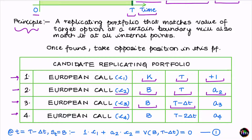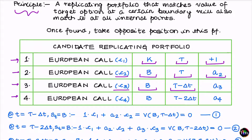All three options corresponding to the red boundary have strike equal to B, the barrier level, and different maturities: T, T minus delta-t, and T minus 2·delta-t. The task at hand is to find a2, a3, and a4 such that the value of the replicating portfolio is exactly zero along the red barrier.